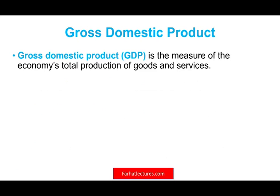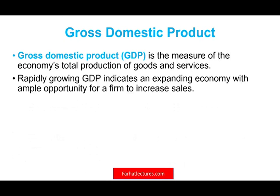What is GDP? It's the measure of the economy's total production of goods and services. If you have a rapid increase in GDP — a rapid increase in economic output of goods and services — it means the economy is expanding, and there's a big opportunity for companies to increase sales. If people have more income and the economy is growing, you should be able to increase your sales. China, for decades, had double-digit growth in their GDP, though it's now slowing down because they've become so large.